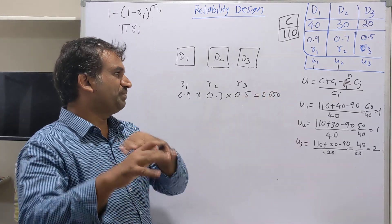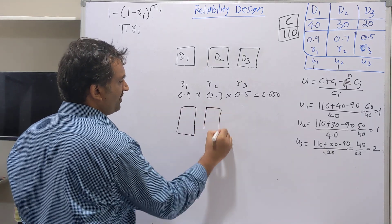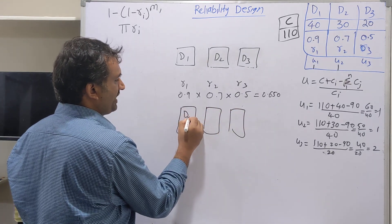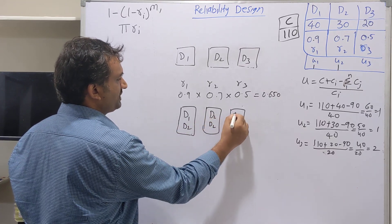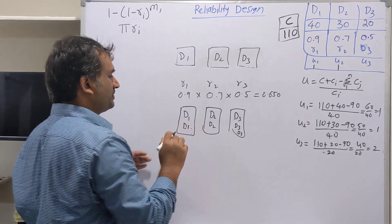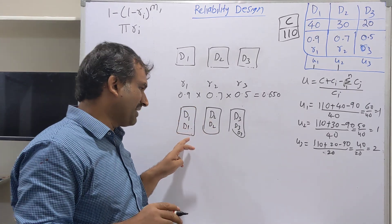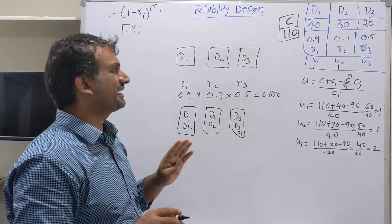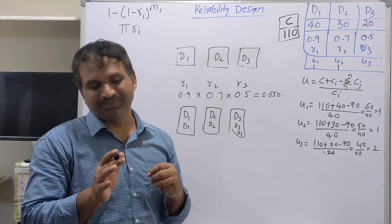In order to improve the system reliability, we can duplicate the number of resources. For example, you can duplicate D1 into 2 copies, D2 into 2 copies, D3 into 3 copies. If you duplicate the resources, individual device reliability will increase, which will improve the overall system performance — but it must be under the cost.